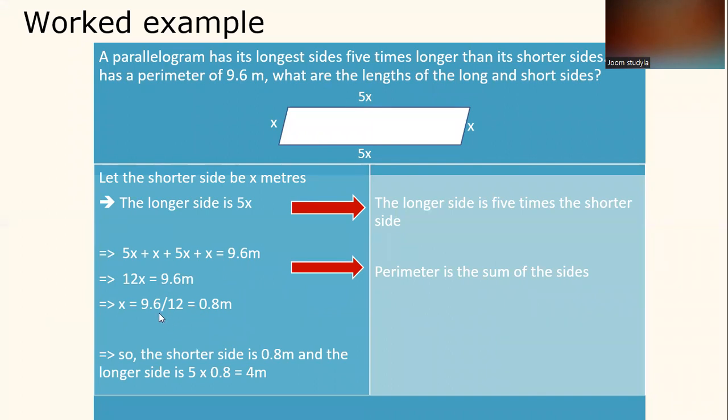So the total is 12X equals 9.6 meters, and X will carry a value of 9.6 divided by 12, which is 0.8 meters. So the shorter side is 0.8 meters, and the longer side is 5 times 0.8, which is 4 meters.